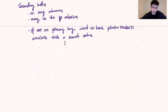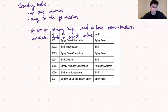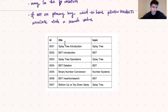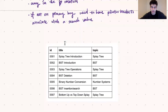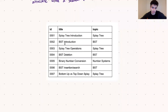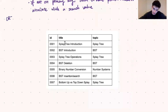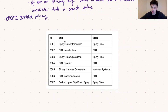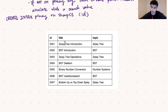Let's look at some examples. The first example is a primary index on our table sharp cs. We call the command CREATE INDEX primary ON sharp cs and create this index on the column ID. We know this is going to be a primary index because we are creating it on the primary key column of our table.